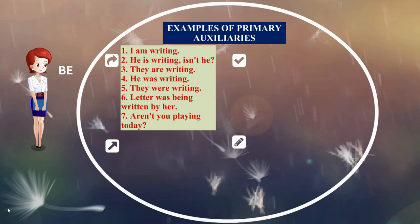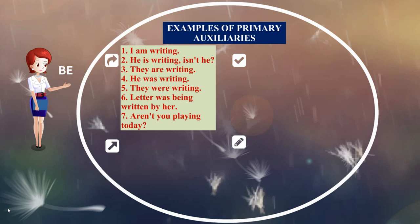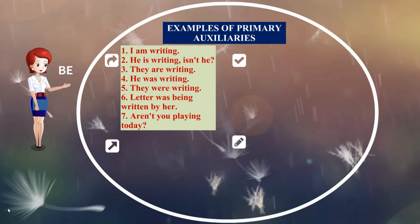'They were writing' — 'were' is the auxiliary. In the passive voice: 'The letter was being written by her' — both 'was' and 'being' are auxiliaries, indicating passive voice. 'Aren't you playing today?' — this forms a question using the negative 'are not'. Whenever you see these words, you should immediately recognize them as primary auxiliaries of the 'to be' form.